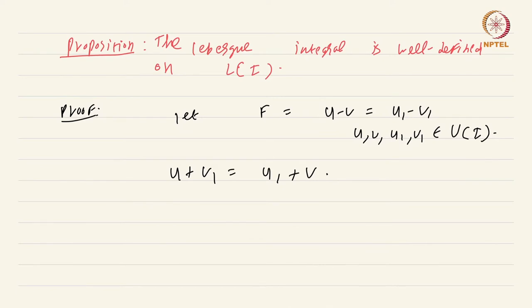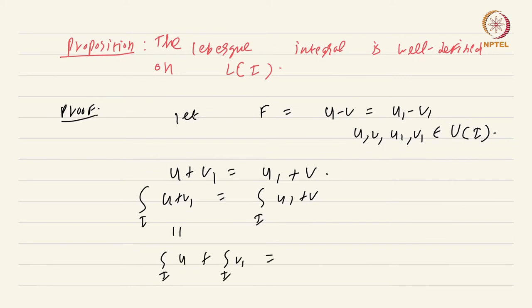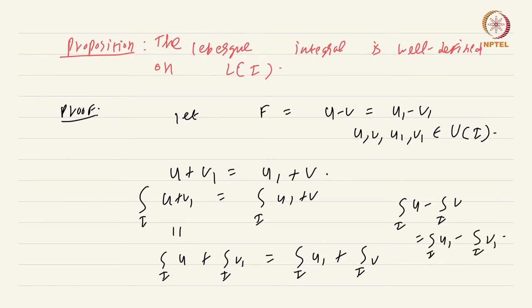Therefore, what we can conclude is that the integral over I of u plus v₁ equals the integral over I of u₁ plus v. Using linearity of the upper integral, this gives integral of u plus integral of v₁ equals integral of u₁ plus integral of v, which immediately shows that integral of u minus integral of v equals integral of u₁ minus integral of v₁. This is exactly what we wanted to show — the definition of the Lebesgue integral is not problematic, no matter what decomposition you choose for f, the value of the integral is always the same.